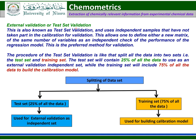Test set validation, also known as standard validation, uses independent samples that have not taken part in the calibration for validation. This allows one to define a new matrix of the same number of variables as an independent check of the performance of the regression model. This is the best method for validation. The procedure splits all the data into two sets: the test set contains 25 percent of the data for external validation, while the training set includes 75 percent to build the calibration model.